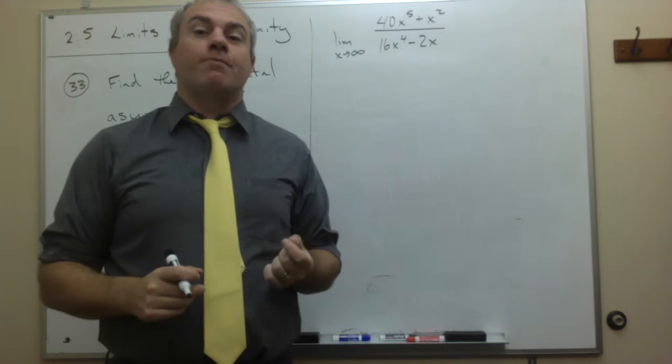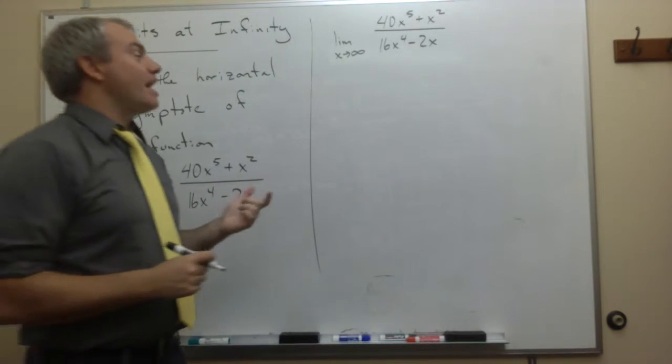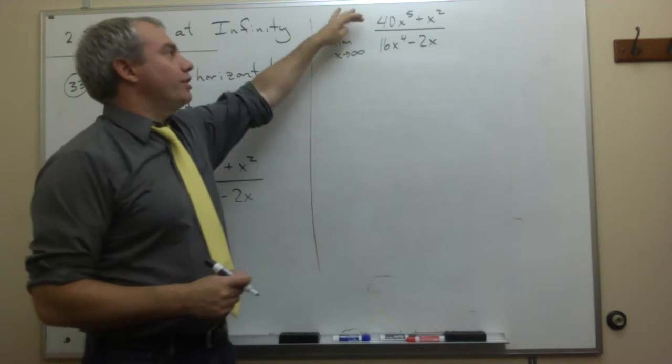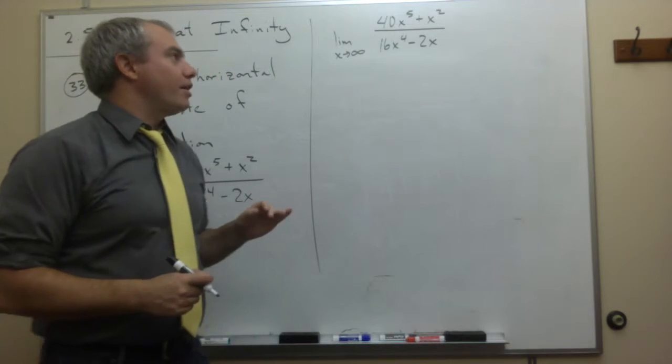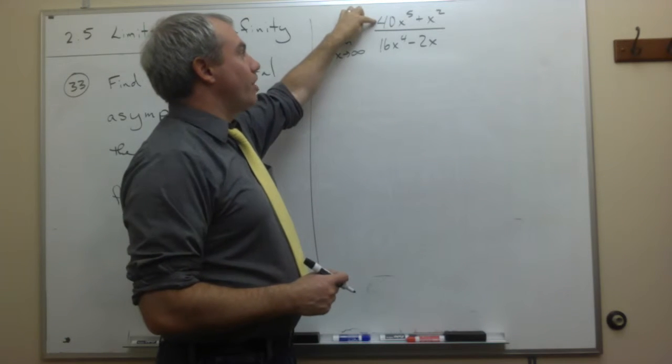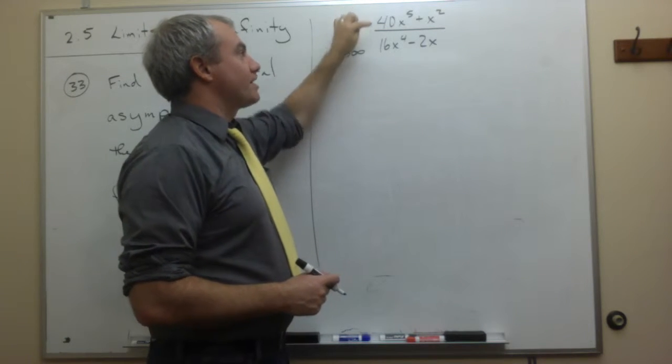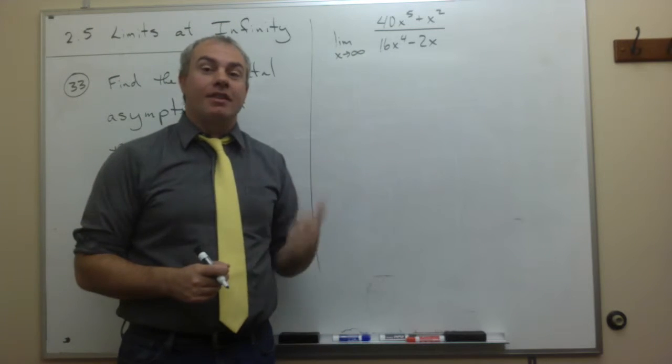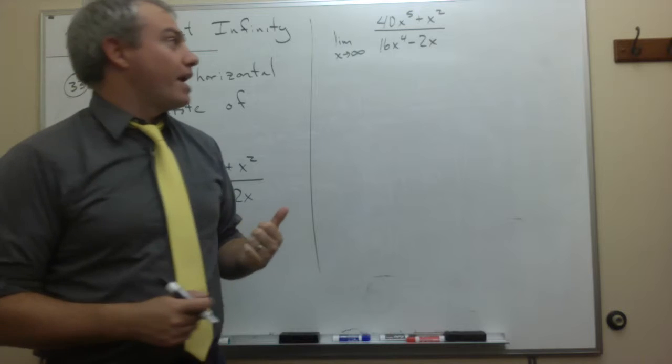Just as we've been doing in some of the previous videos, the next step that I want to do is I want to figure out, look at the numerator, look at the denominator, which of them has the highest power of x. Well in this case it's the numerator and the highest power of x is x to the fifth. So let's divide the top and the bottom of this fraction by x to the fifth.